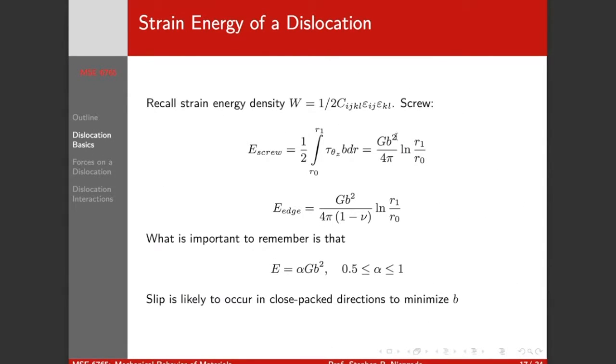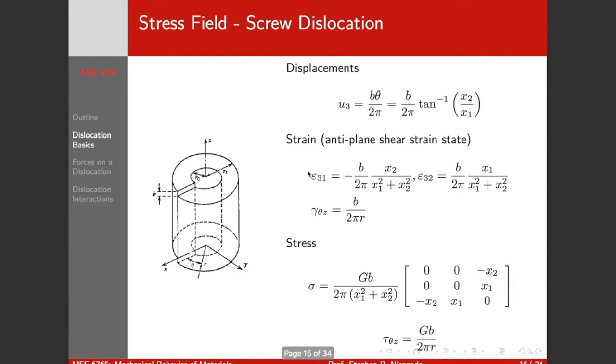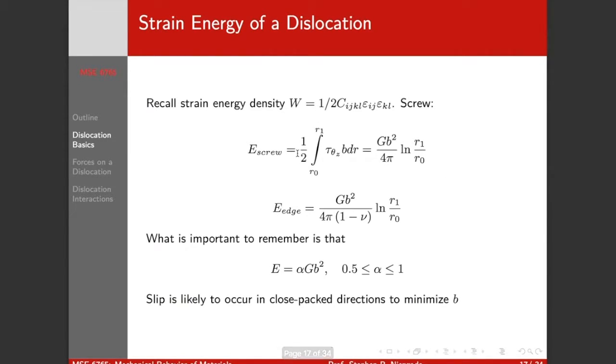We can't integrate it from 0 out because we have a singularity at the core. When we reach the dislocation line, we've got a singularity. So we need to move some distance away from the core. And so this is neglecting the core energy here. But if we do that, we end up with a dislocation. The energy of a dislocation is going to be proportional to GB² over 4π.